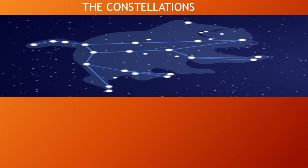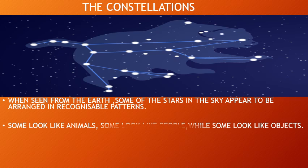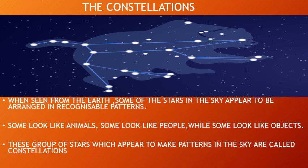The constellations. When seen from the earth, some of the stars in the sky appear to be arranged in a recognizable pattern. You might have seen when you go to your terrace at night, especially the children, they can see more number of patterns there. Some look like animals, some look like people and some look like objects. These groups of stars that appear to make patterns in the sky are called constellations.